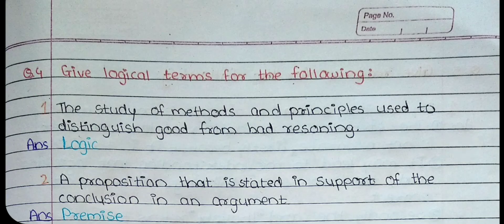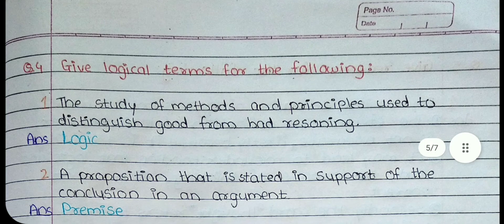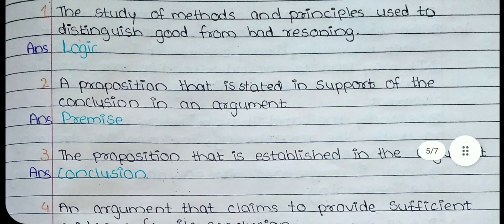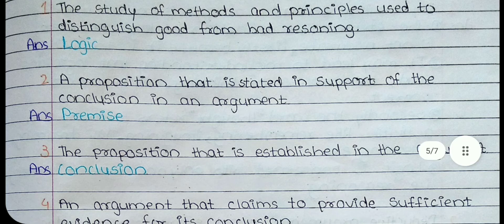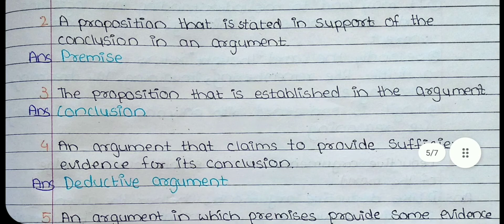Give logical terms for the following. 1. The study of methods and principles used to distinguish good from bad reasoning. The answer is Logic. 2. A proposition that is stated in support of the conclusion in an argument. The answer is Premise. 3. The proposition that is established in the argument. The answer is Conclusion.